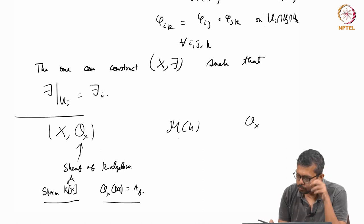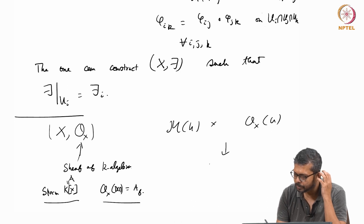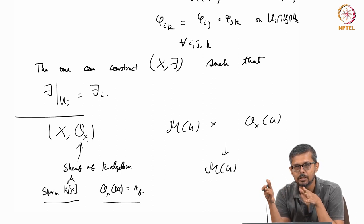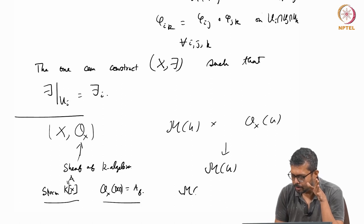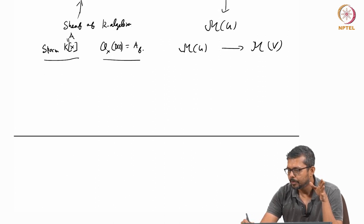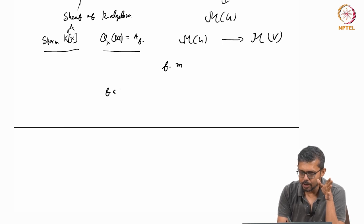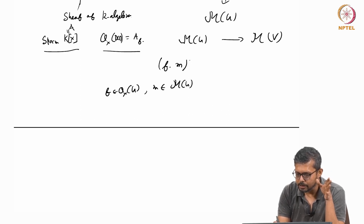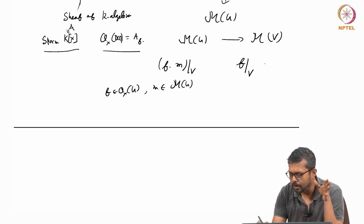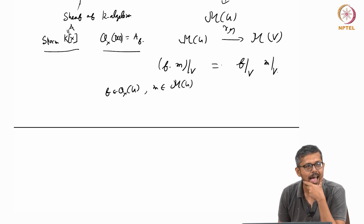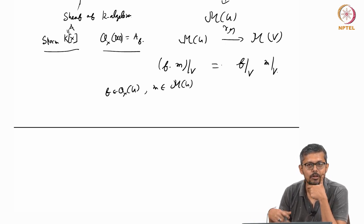We say M is a sheaf of OX modules if for every open set, M(U) is an OX(U)-module. There is an obvious restriction map from M(U) to M(V) whenever V is an open subset of U. But that map must satisfy a compatibility property: if you take an element f in OX(U) and m in M(U), the restriction to V must commute - so the map is compatible with the module structure.